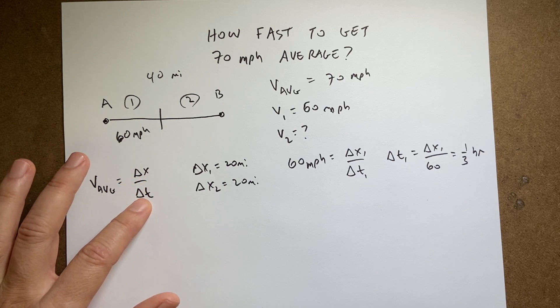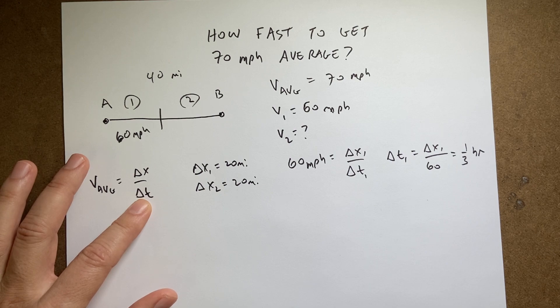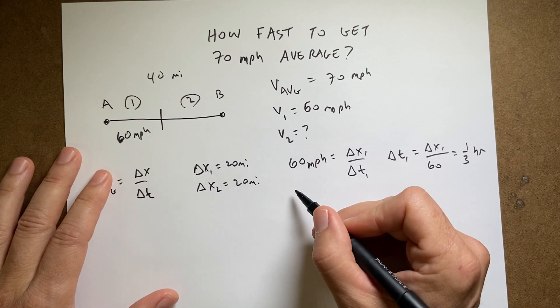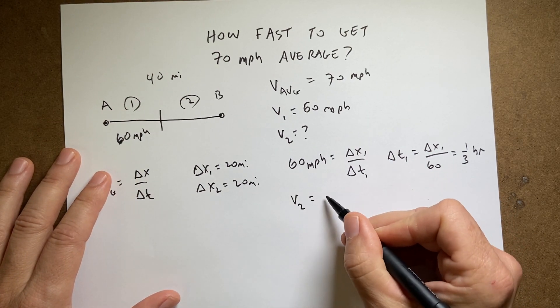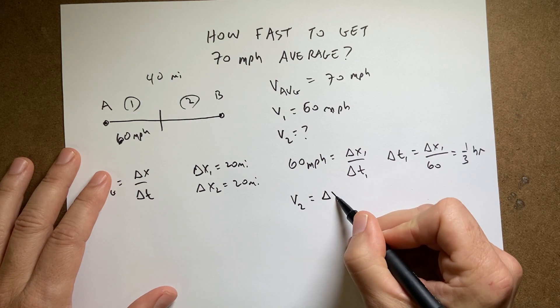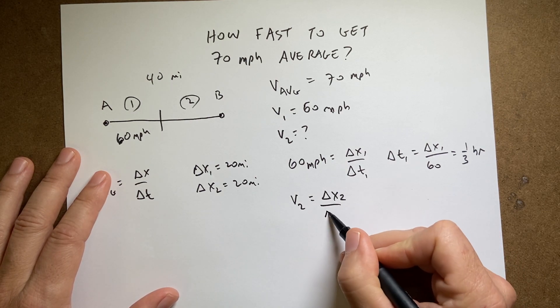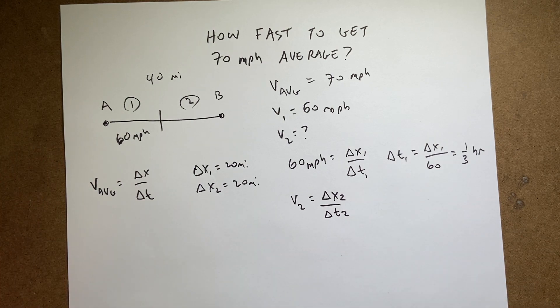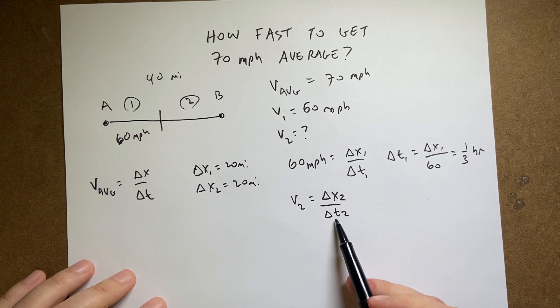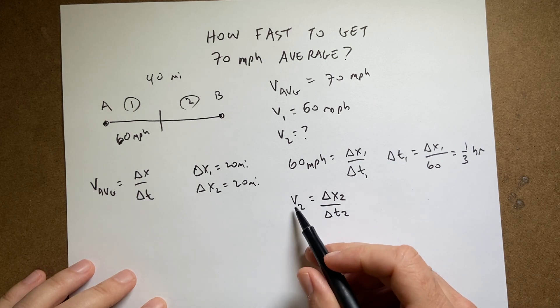Now let's write the expression for the second half. We'll call that v2 equals delta x2, which is 20, divided by delta t2, which I don't know. Okay, so let's find delta t2 and then I can find v2.